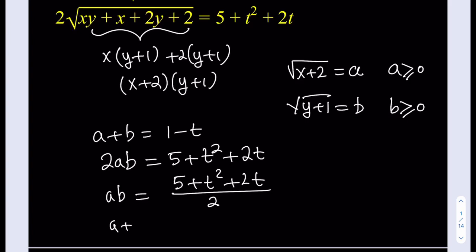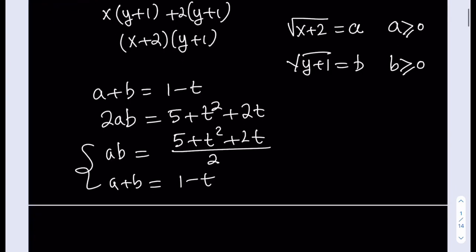We also know that a plus b equals 1 minus t. So if we consider this as a system, we're looking for two numbers a and b — whose product and sum are both given. Thinking about François Viète, we can set up a quadratic equation, because we have the product of the roots and the sum of the roots.